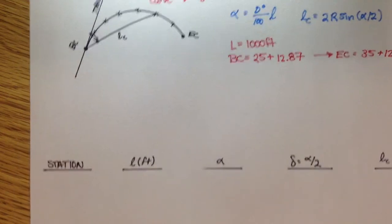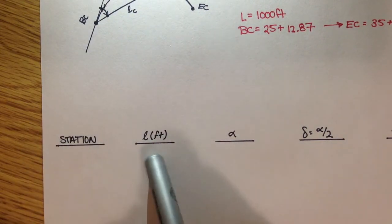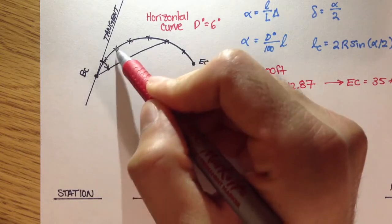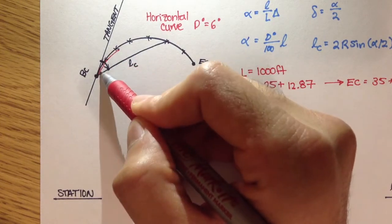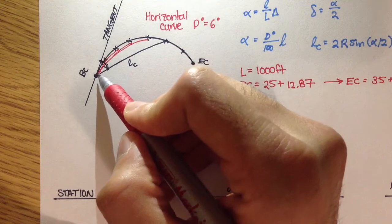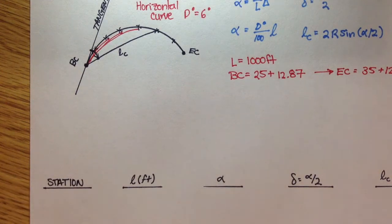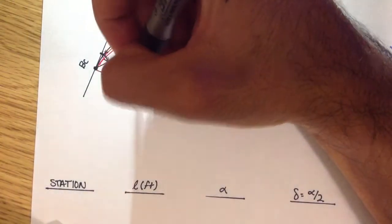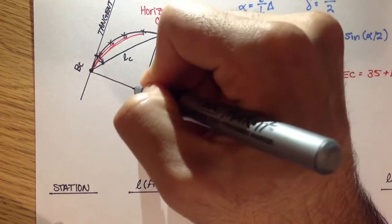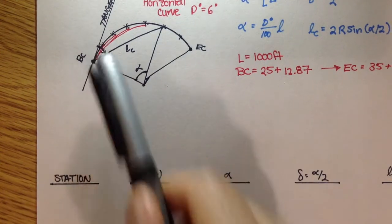I've set up a chart to make things simpler. Column 1 is stations, column 2 is little l — the arc length from BC to each point. Then we have alpha, which is the central angle from BC to each point, and the deflection angle.